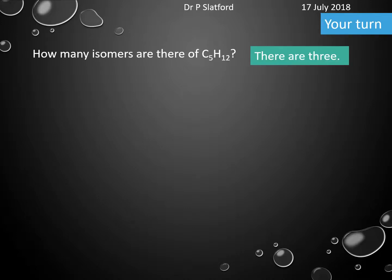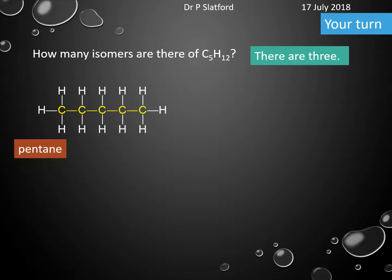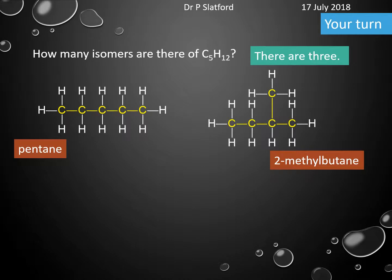There are actually three structural isomers of C5H12. We have pentane, which is all five carbons in a row. We have 2-methylbutane, which is four in a row with one coming off the second carbon — if it came off the end carbon, that would be exactly the same as 2-methylbutane.